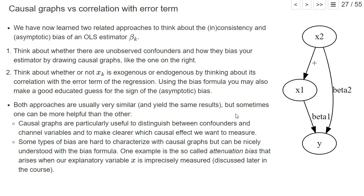However, it's not so easy to show the attenuation bias in a graph like this. So that would be an example where this thinking about endogeneity and the bias formula is more helpful. And that's the reason why I have shown you both approaches, not only the causal graphs.